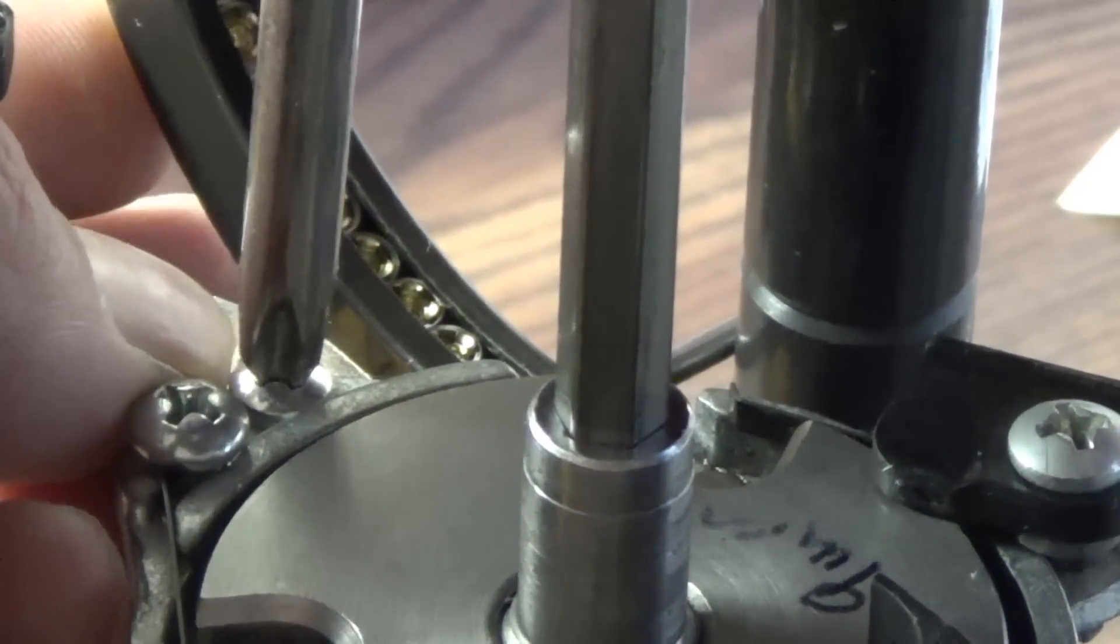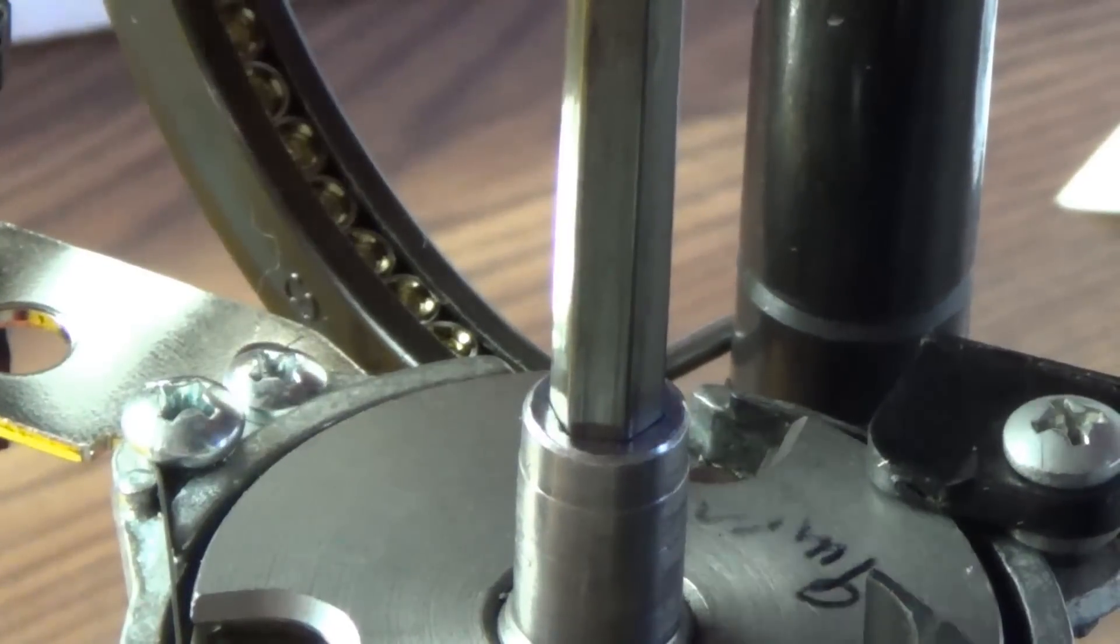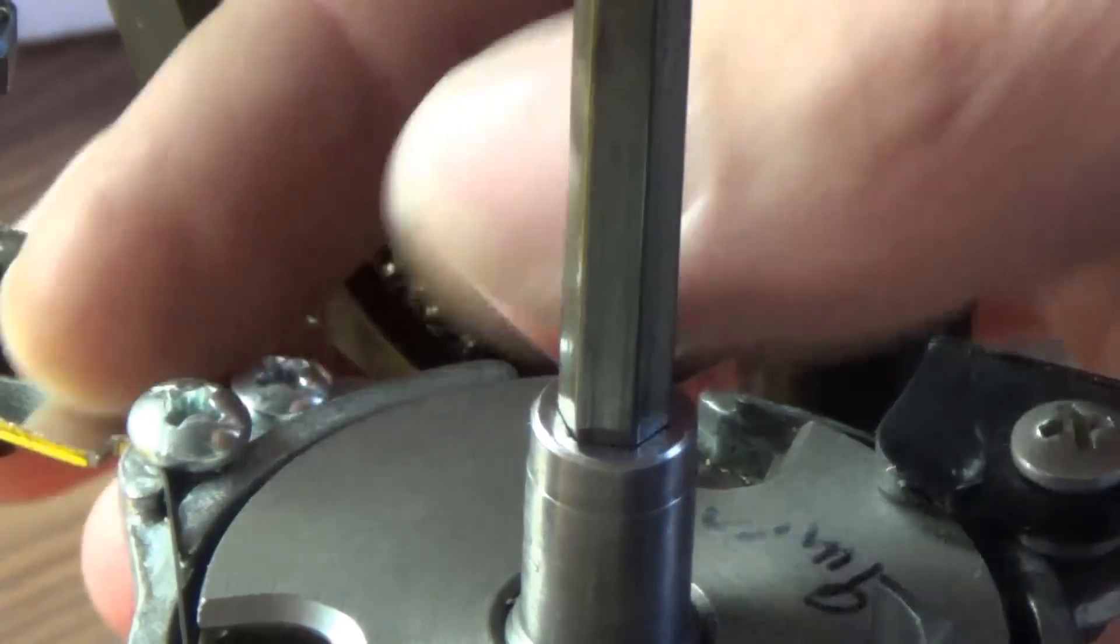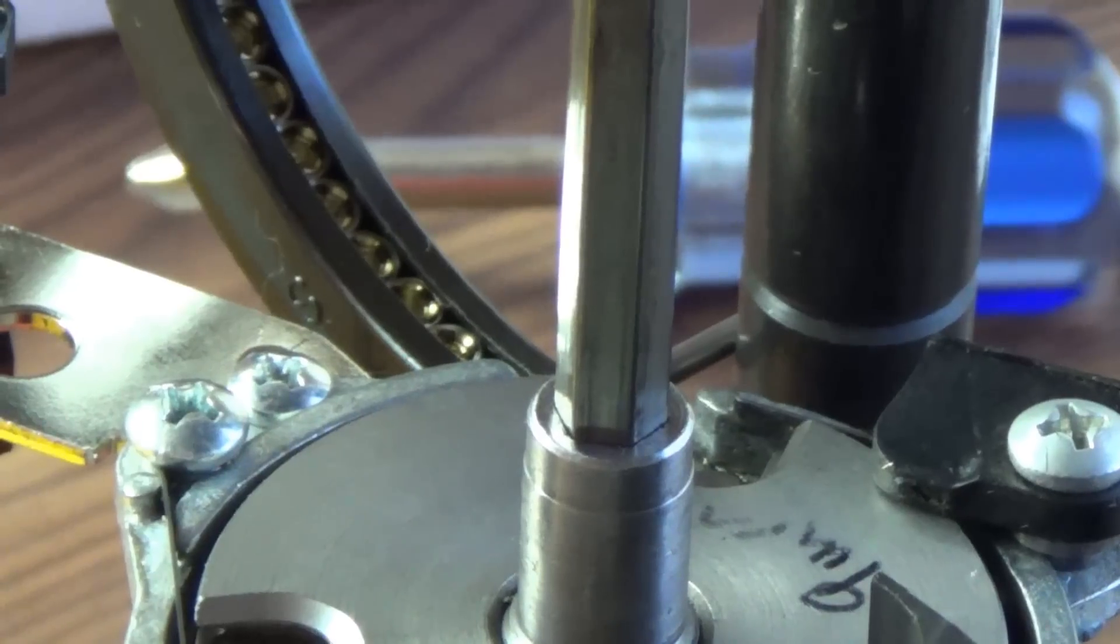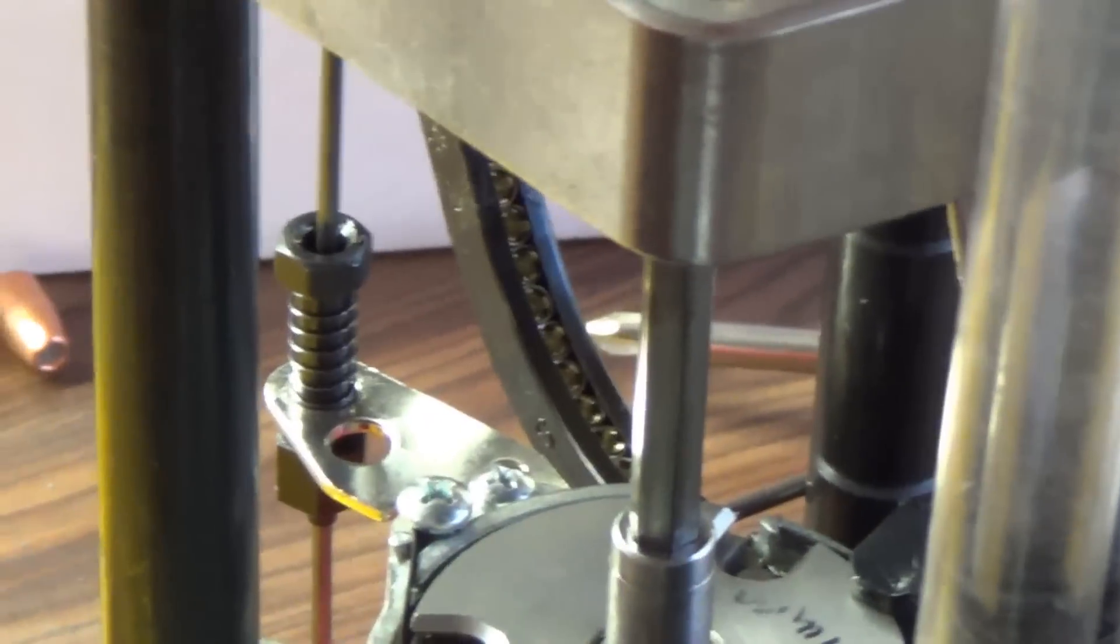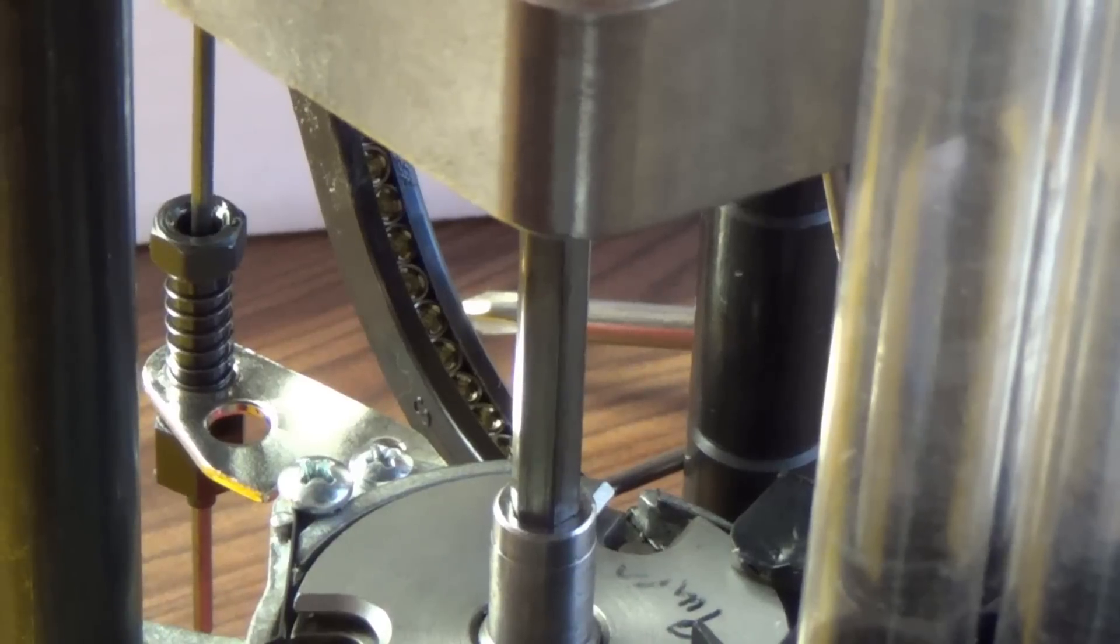You don't need to crank that down, you just want to snug it up. So the bracket's underneath the shell plate, this screw goes through the top. So there's a better view of how it's on there.